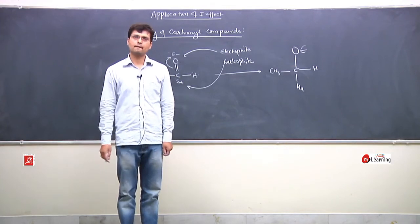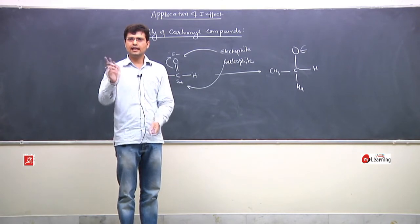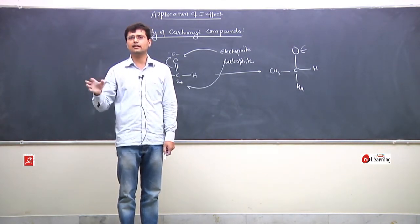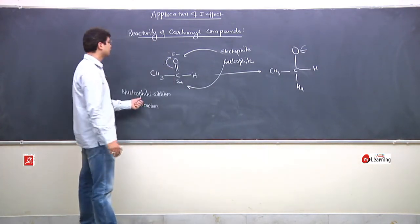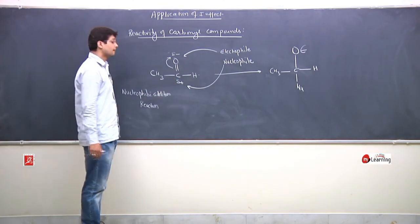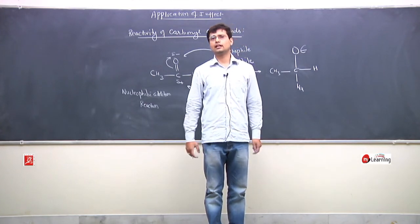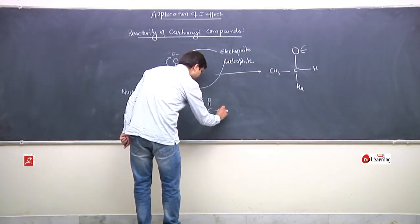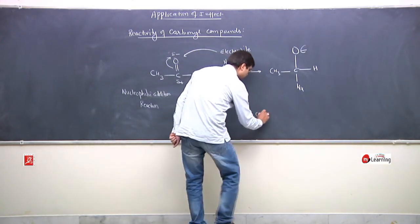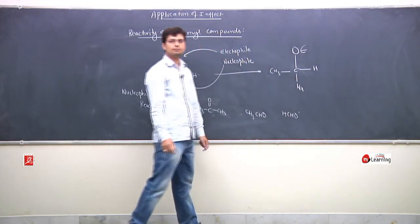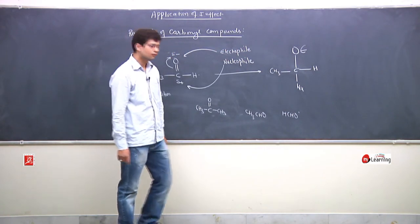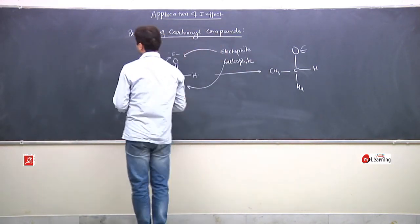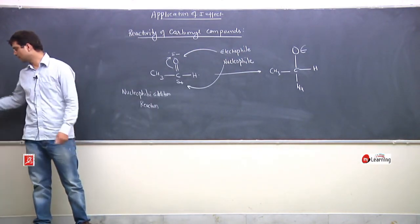This is nucleophilic addition reaction — because two things came and both got added; nothing went out. If one comes and one goes, that would be a substitution reaction. But here everything only added and nothing left, so it is an addition reaction, and since the nucleophile attacked first, it is nucleophilic addition. Now in the context of the I-effect: consider acetone (CH3-CO-CH3), acetaldehyde (CH3CHO), and formaldehyde (HCHO). Note these structures and then I will explain them.